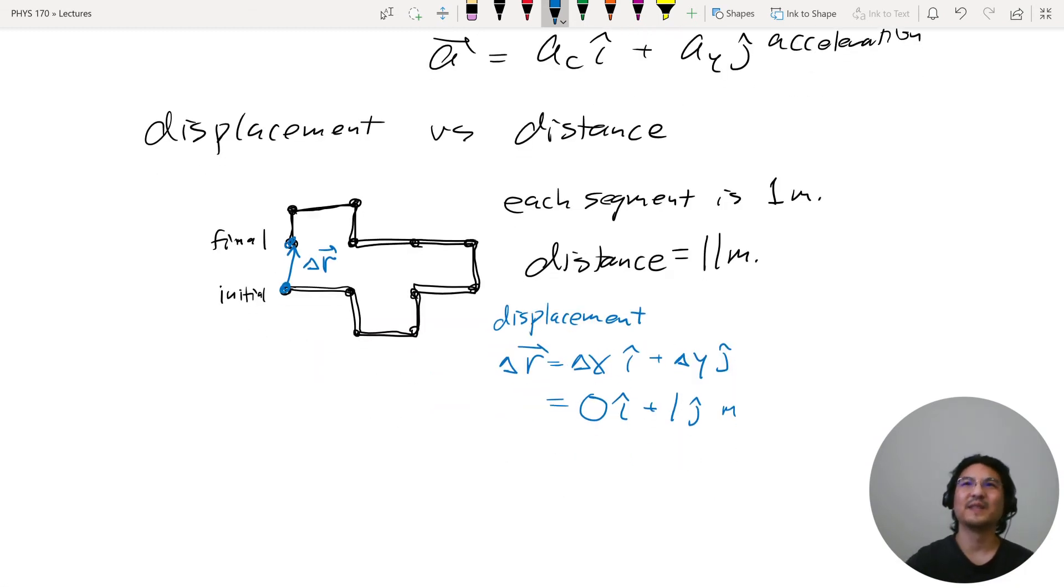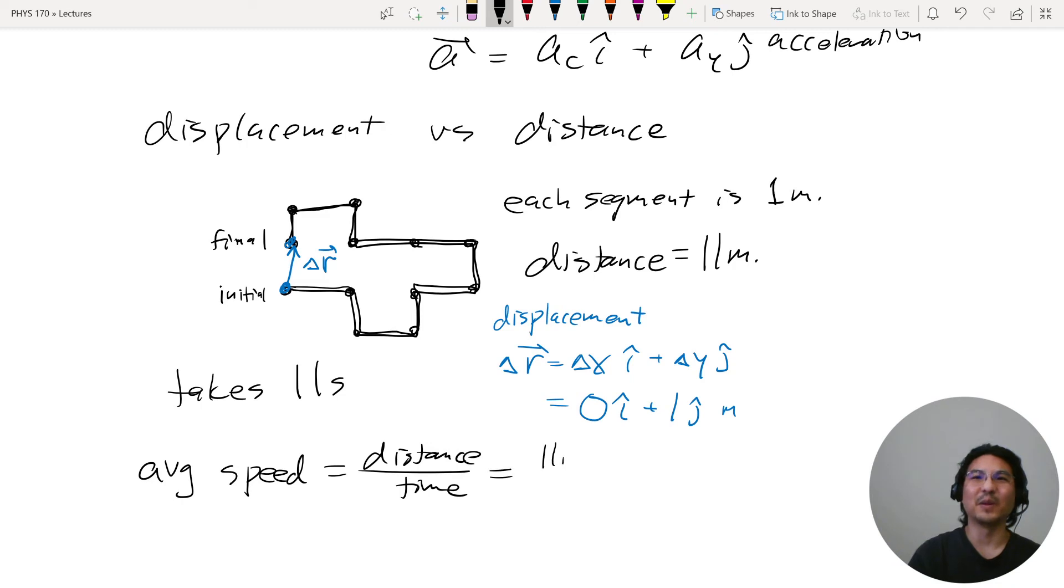And that brings us to, let's say it takes you 11 seconds. So 11 seconds to walk from here to here. I don't know, maybe that's kind of fast. Okay, so average speed is distance over time. So in this case, you went a distance of 11 meters, and it took you 11 seconds. So your average speed was one meter per second.